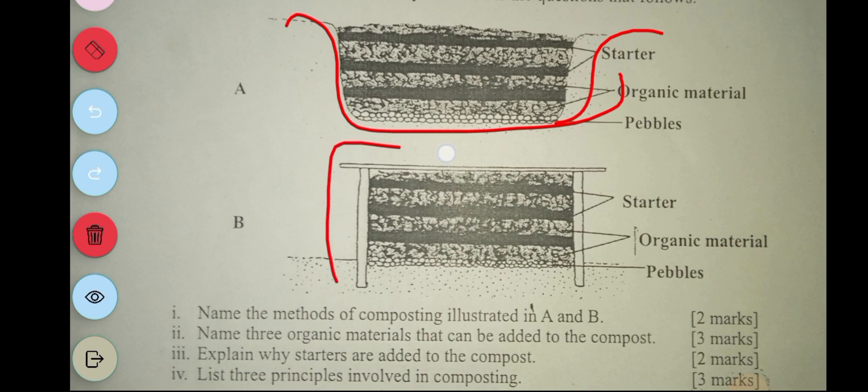And for B, you can see that it's above the ground. So B is called the heap method. A is pit method, B is heap method.